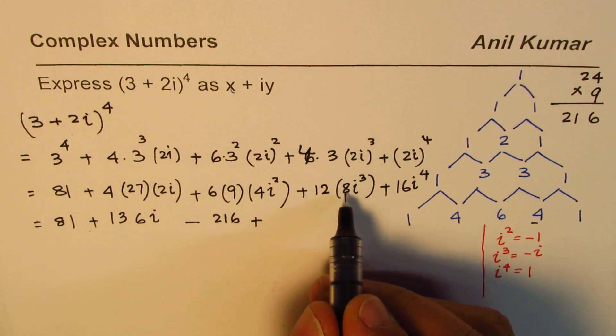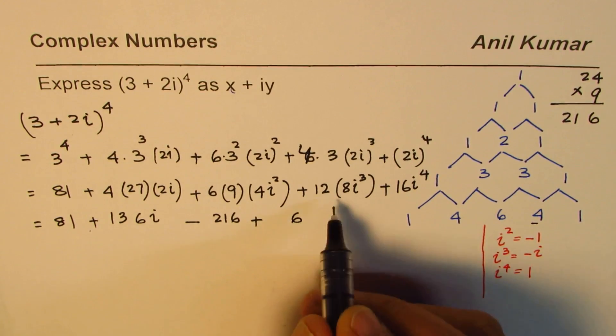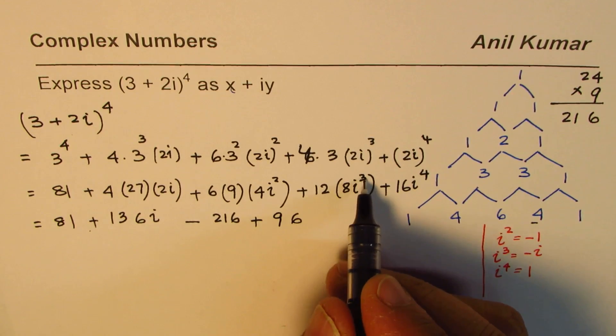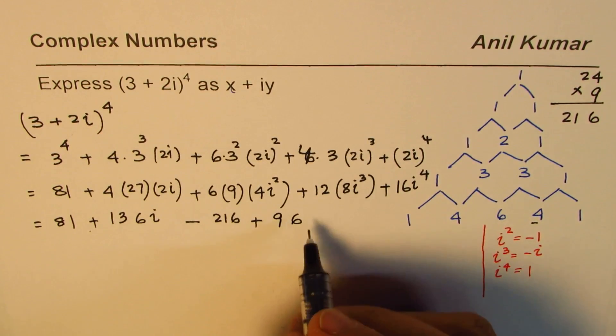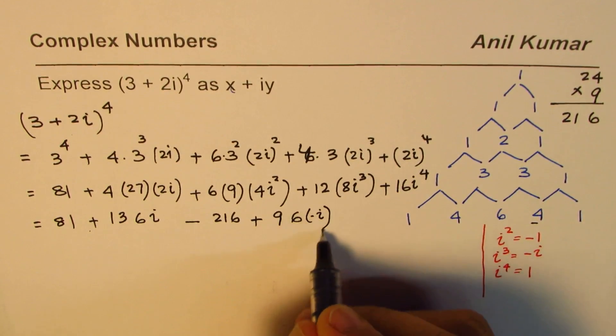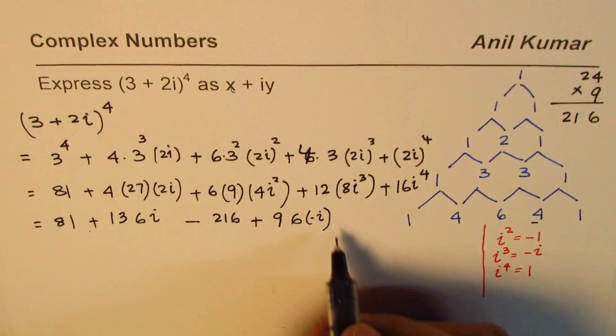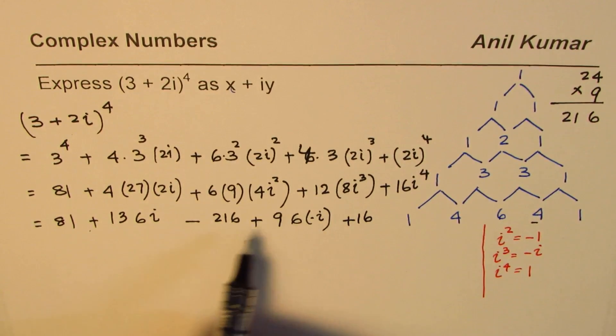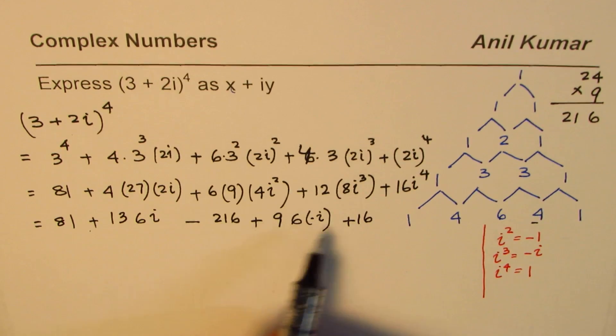Now 12 times 8: 8 times 2 is 16, so 96. i cube is minus i, so I'll write minus i this time. i to the power of 4 is 1, so we get plus 16. You see that, so we have two terms with i and others are constant real numbers. We'll add them up.